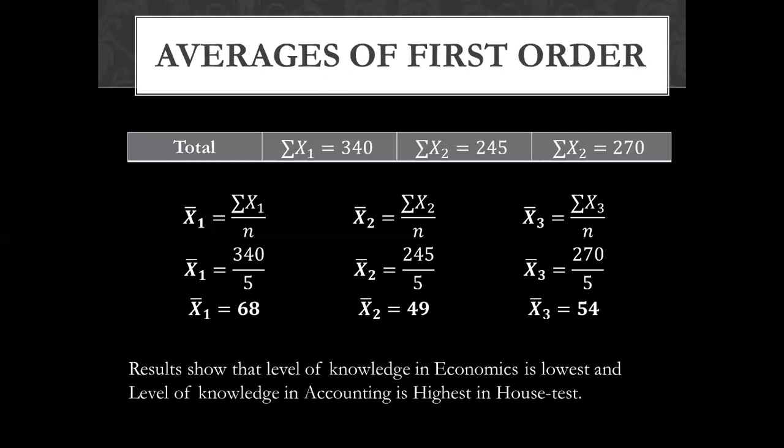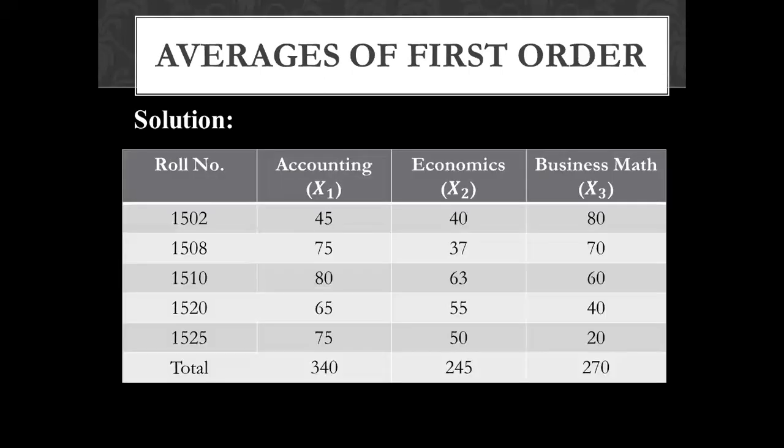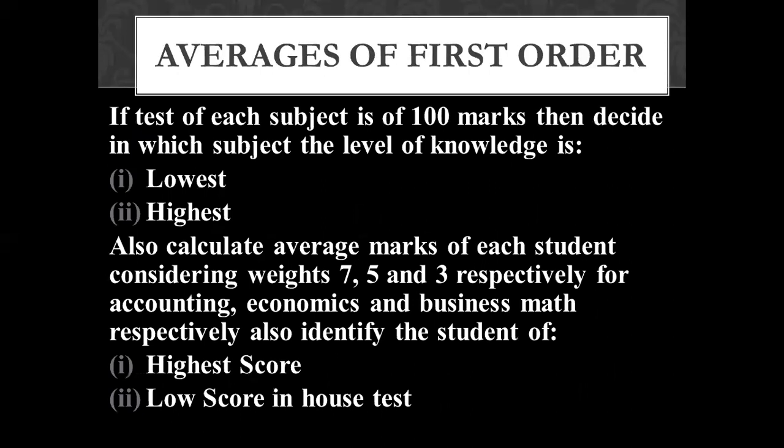Next, let's look at the second calculation of question 3.9: the weighted mean. We have three weights given: accounting weight is 7, economics is 5, and business math is 3.